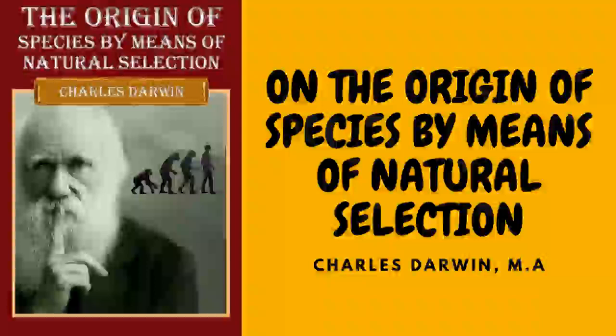Selection. Let us now briefly consider the steps by which domestic races have been produced either from one or from several allied species. Some little effect may perhaps be attributed to the direct action of the external conditions of life, and some little to habit; but he would be a bold man who would account by such agencies for the differences of a dray and race horse, a greyhound and bloodhound, a carrier and tumbler pigeon. One of the most remarkable features in our domesticated races is that we see in them adaptation not indeed to the animal's or plant's own good, but to man's use or fancy. Some variations useful to him have probably arisen suddenly or by one step. Many botanists, for instance, believe that the fuller's teasel, with its hooks which cannot be rivaled by any mechanical contrivance, is only a variety of the wild Dipsacus.